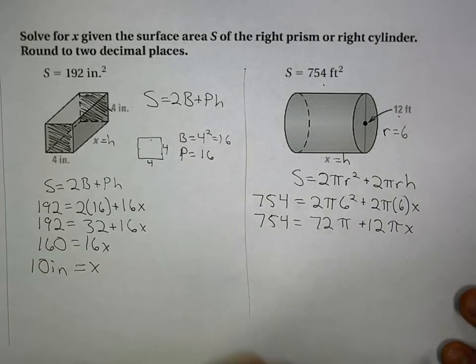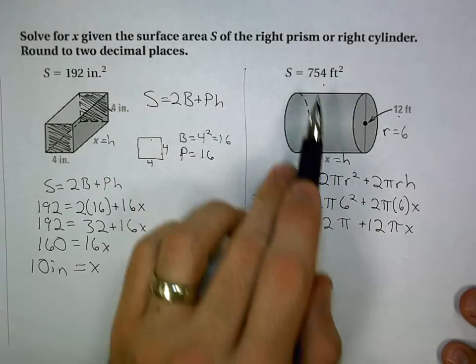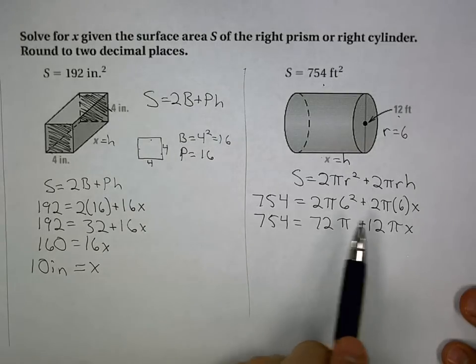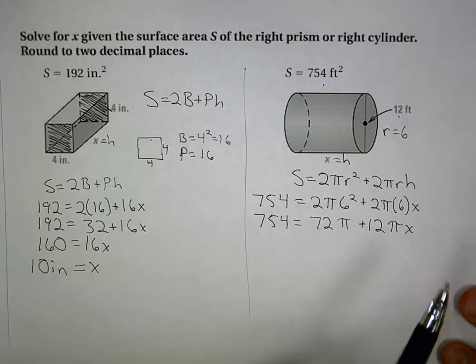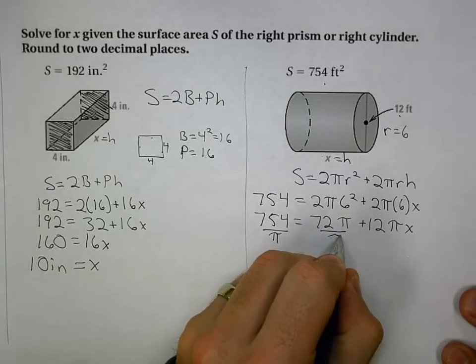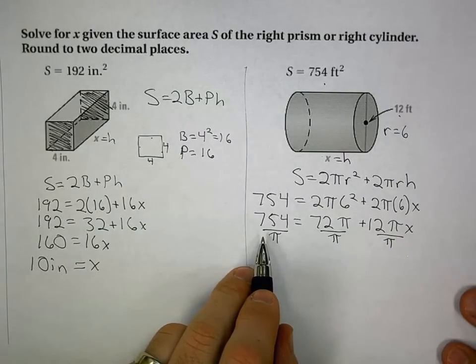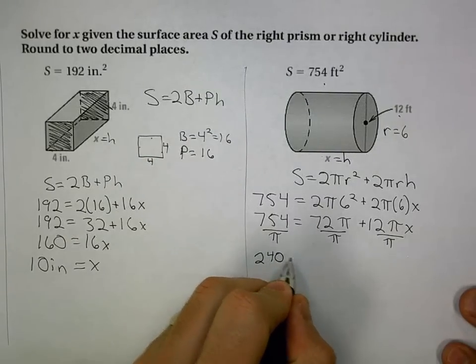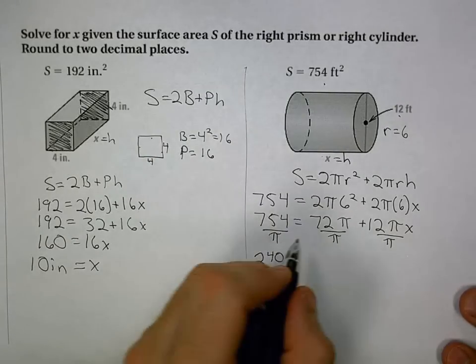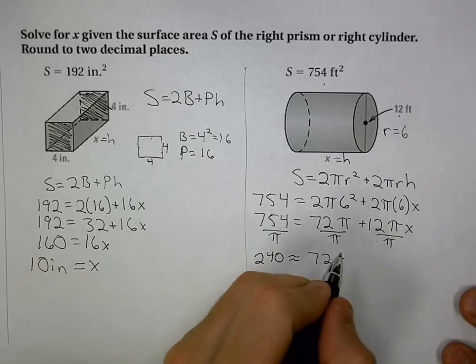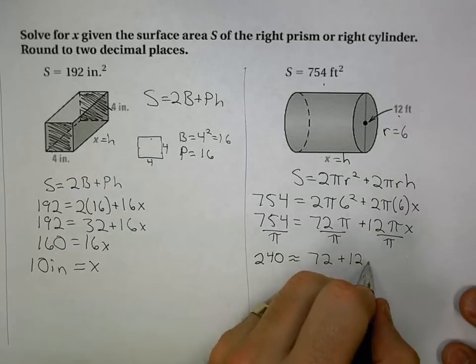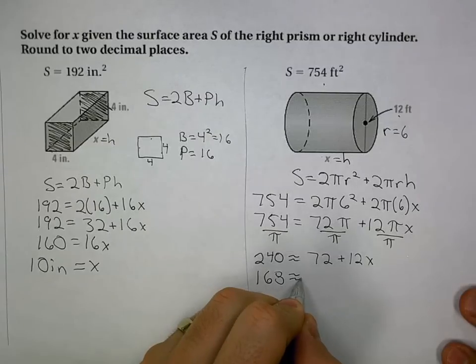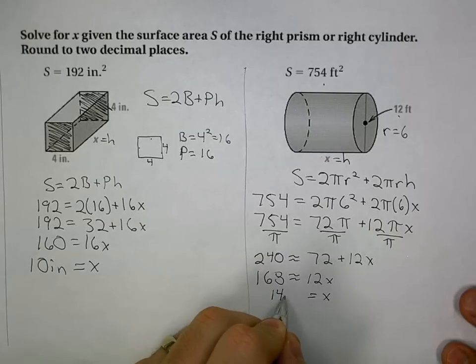Since I didn't get my original surface area in terms of π, I'm likely going to have a decimal. I'm going to divide everything by π. 754 divided by π is about 240. 72π over π becomes 72, and 12πx over π becomes 12x. Subtracting, I get 168 is approximately 12x, and x comes out to be approximately 14 feet.